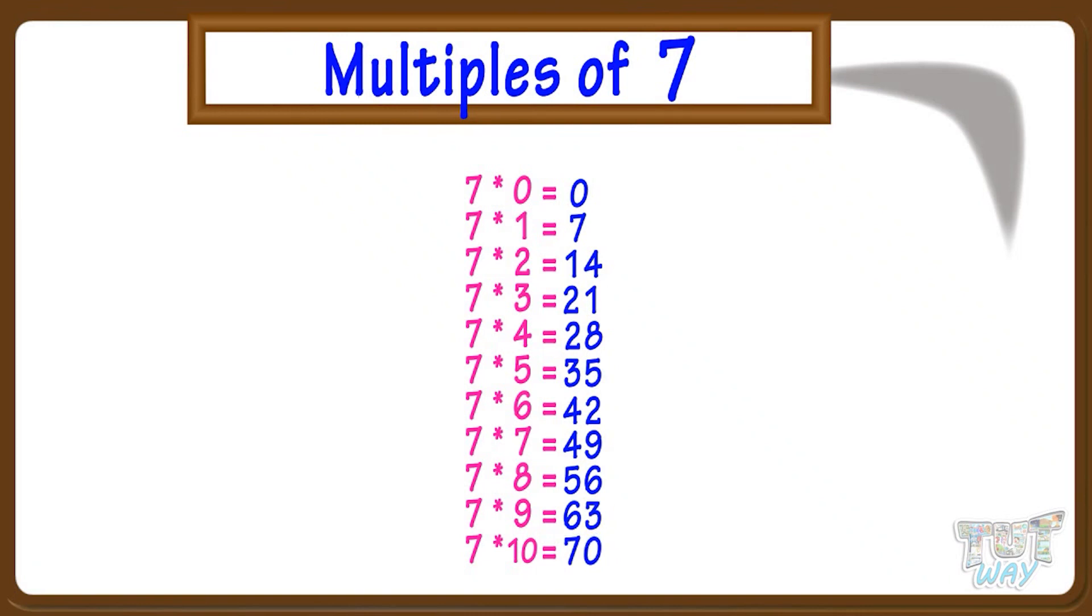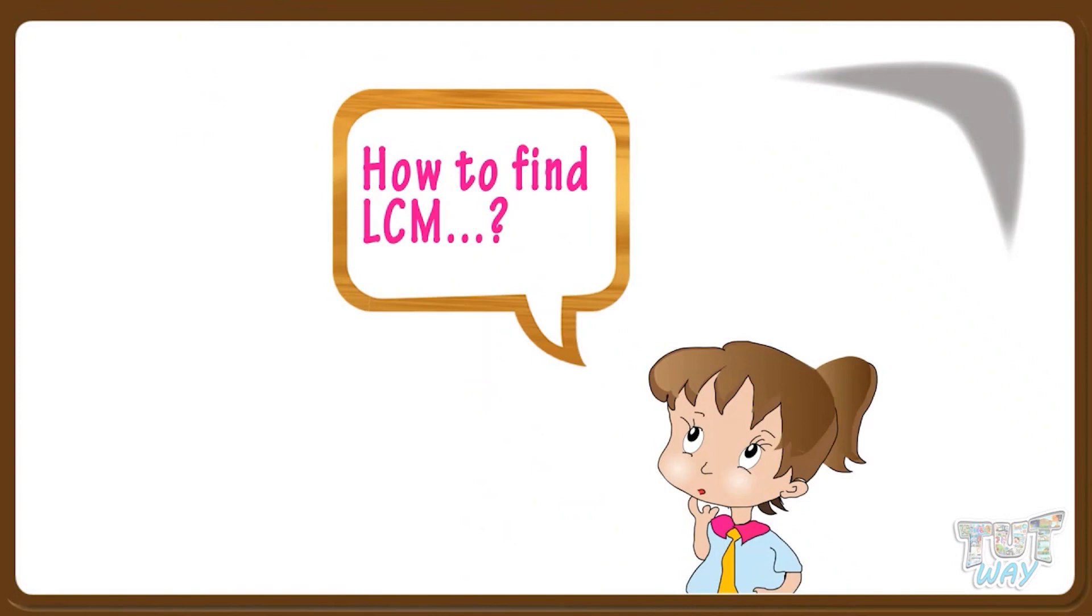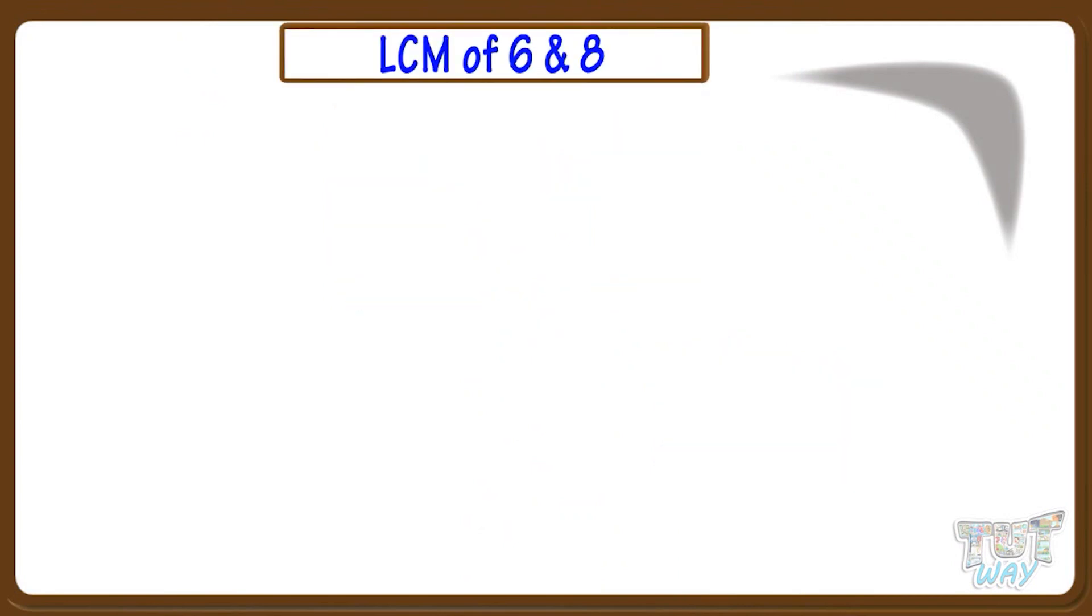Now let's learn how to find LCM or least common multiple of 6 and 8 using a method that uses prime factorization. So let's learn it.